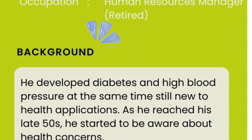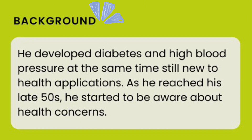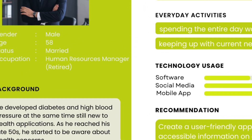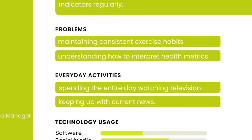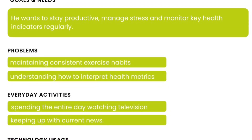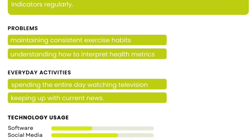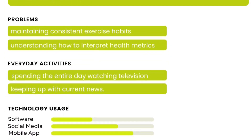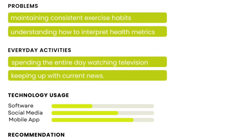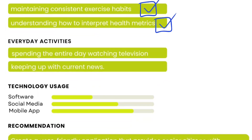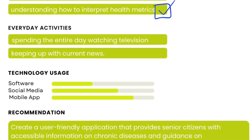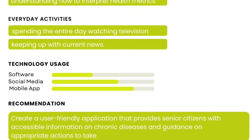worked as a human resources manager before retiring. He developed diabetes and high blood pressure, and while still new to health applications, he became concerned about his health when he was in his late 50s. His goals and needs are to remain productive, manage stress, and regularly assess critical health markers. His issues include maintaining consistent exercise habits and understanding how to analyze health data. Essentially, he spent the entire day watching television and keeping up with current events.